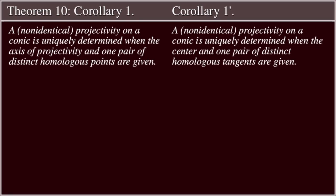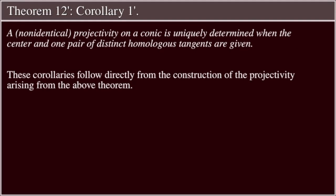Corollary 1: A non-identical projectivity on a conic is uniquely determined when the axis of projectivity and one pair of distinct homologous points are given. Corollary 1': A non-identical projectivity on a conic is uniquely determined when the center and one pair of distinct homologous tangents are given. These corollaries follow directly from the construction of the projectivity arising from the above theorem.